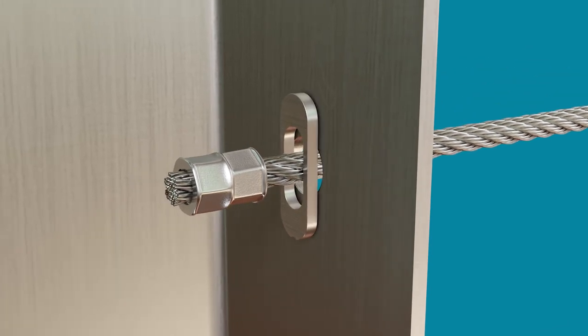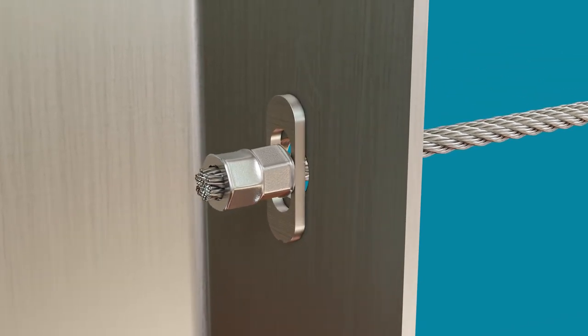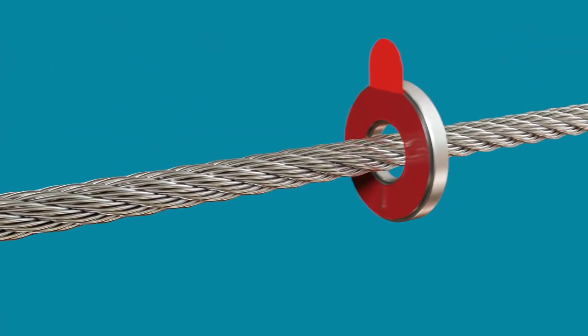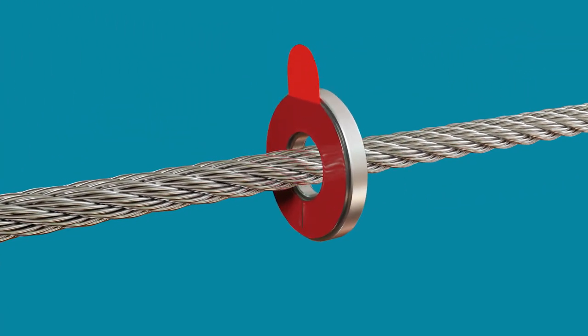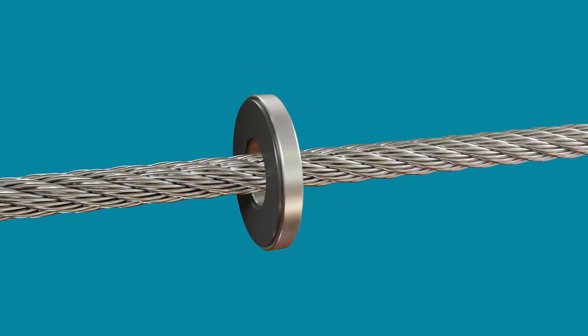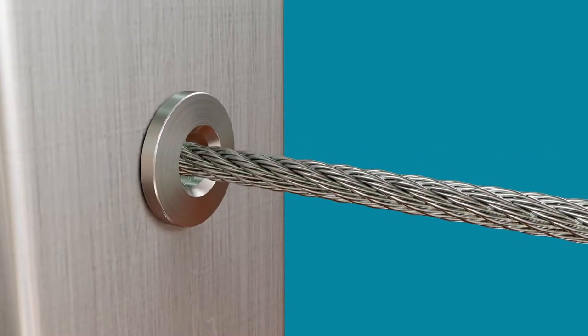Slide it into the hole and pull the cable back toward you, which will lock the termination washer into place against the inside of the wall. Finally, remove the adhesive cover off the adhesive sleeve and push the sleeve against the post.